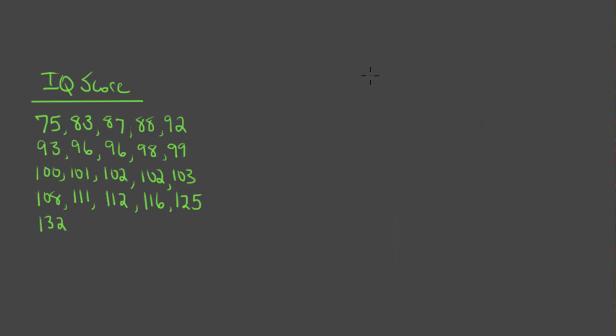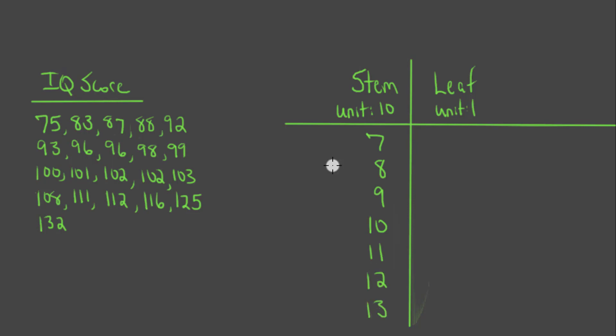At this point, you might be wondering if stem and leaf displays are only useful for two-digit responses, so that we have one digit in the stem and one in the leaf. And while we generally are only going to keep one digit in the leaf, we can have more than one digit in the stem. So if we look at this set of IQ scores, we can see we have a mix of two and three digit numbers. The stem will still represent the tens unit, but we can use stems with two digits to indicate scores greater than 100. So a stem of 10 represents 10 tens, or 100. 11 would represent 11 tens, or 110, and so on.